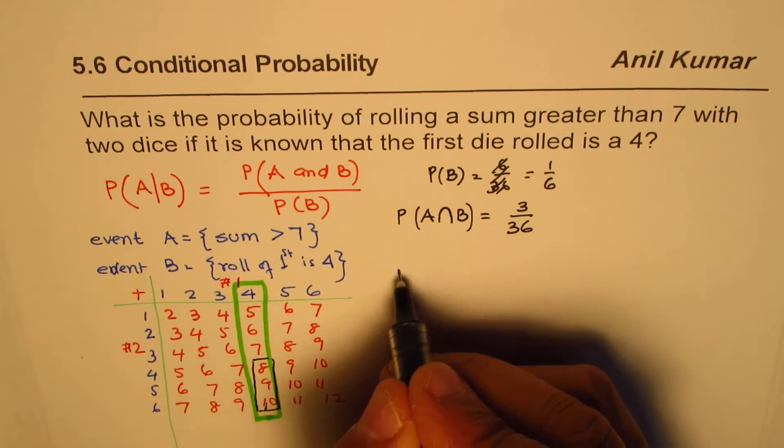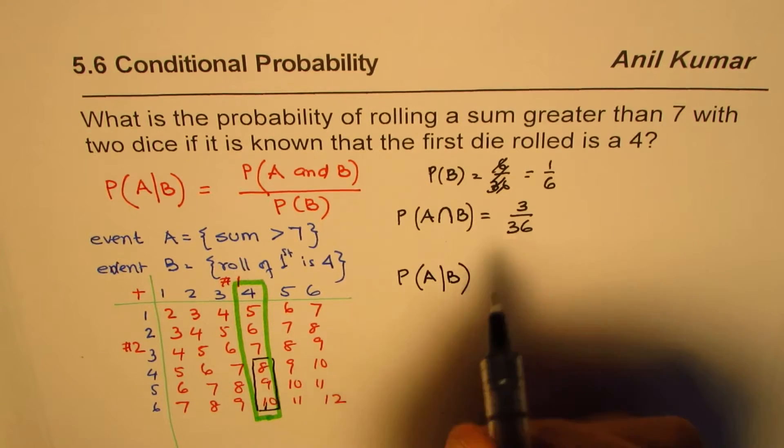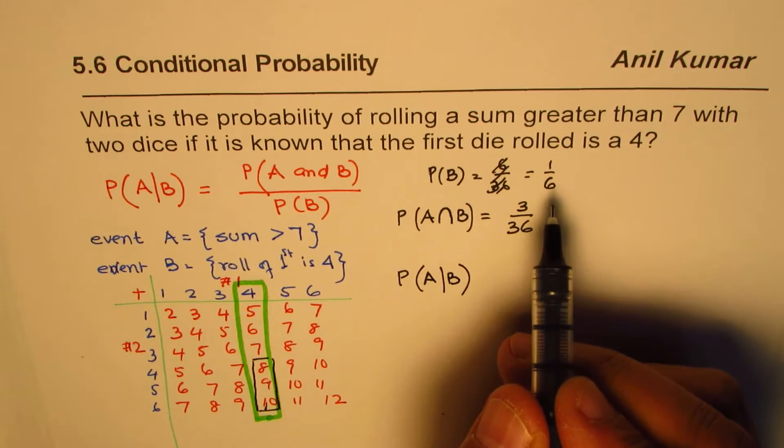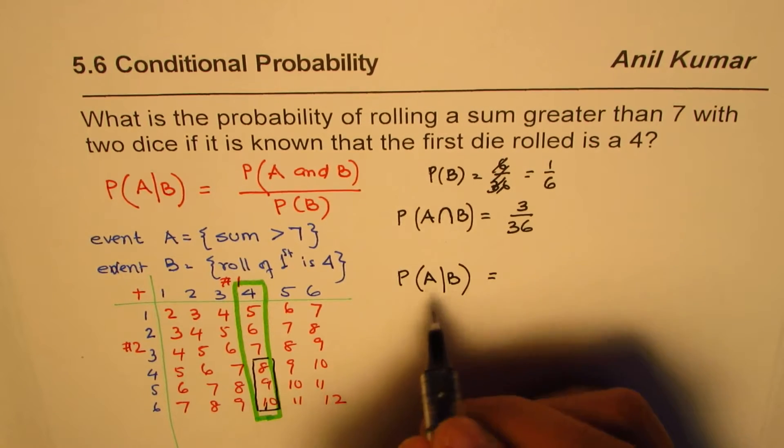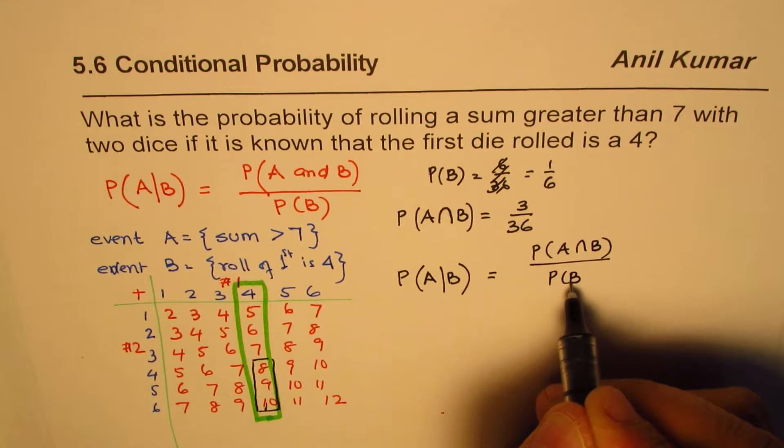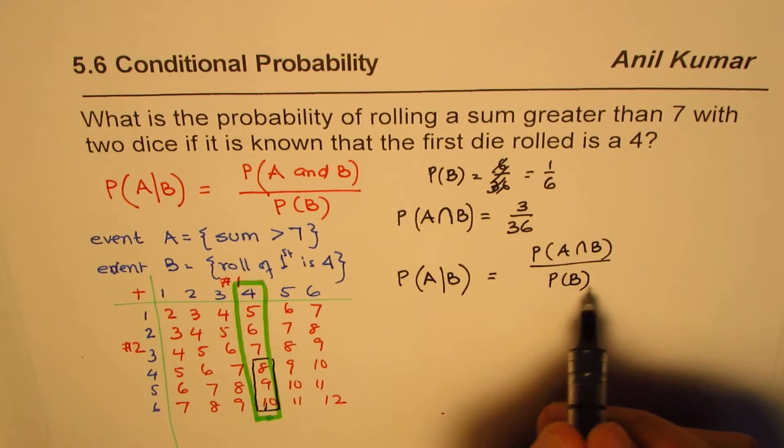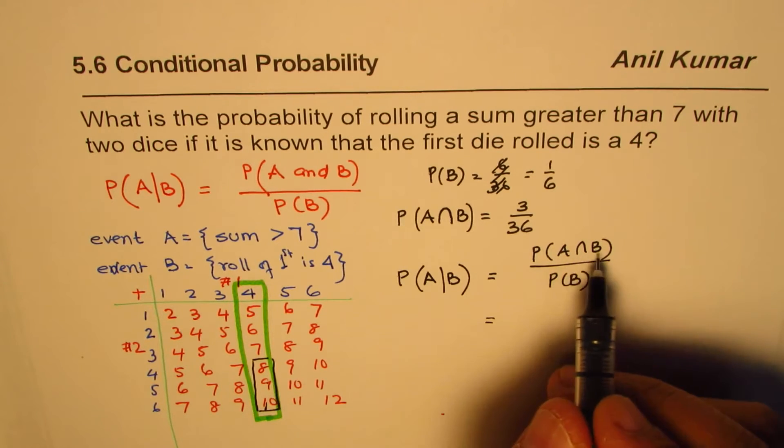And now probability of A to happen when B is certain. So chances of B is 1 out of 6. Now we are given that B is certain. Then A happens. In that case, it is going to be probability of A intersection B divided by probability of B. So now that becomes your sample space. Now what is A intersection B?